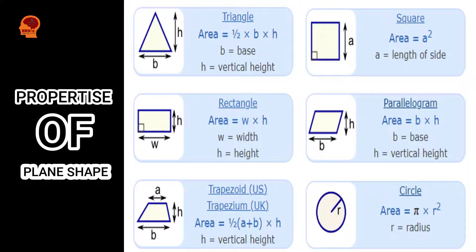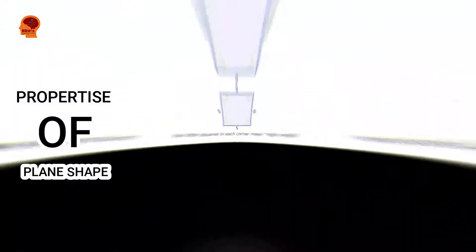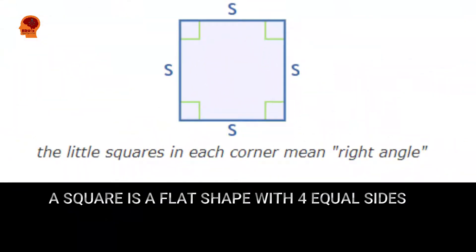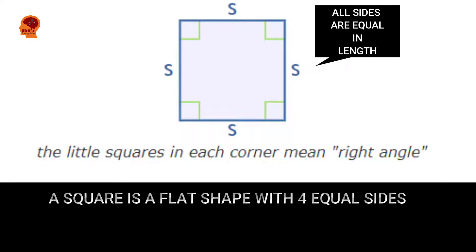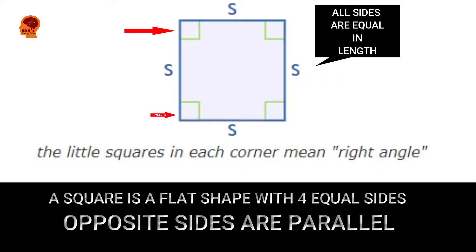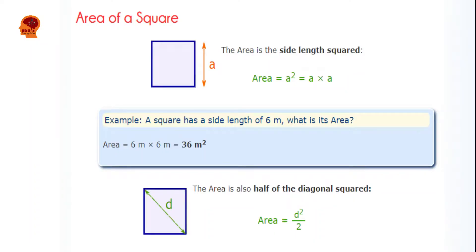We're going to discuss the properties of each plane shape and then calculate their perimeters and areas. A square is a flat shape with four equal sides. All sides are equal in length, each internal angle is 90 degrees, and opposite sides are parallel, so it is a parallelogram. The area of a square equals side length squared: Area = a².